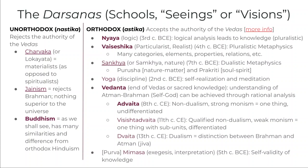On the left, we have the unorthodox or nasthika schools. These are unique in that they reject the authority of the Vedas, and thus their metaphysics tends to be much different. This is where we see Buddhism and also Jainism as being offshoots of Hinduism, but really considered separate religious traditions in that their basic conceptions of reality differ greatly. Buddhism is considered an unorthodox branch because it rejects the authority of the Vedas.